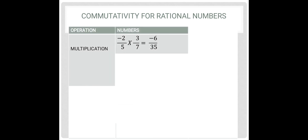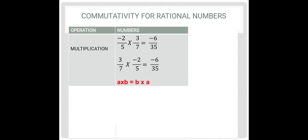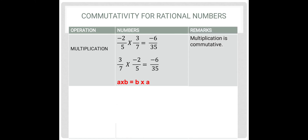Let us now check for multiplication and multiply any two rational numbers. Negative 2 upon 5 multiplied by 3 upon 7: 2 times 3 is 6, minus into plus will be minus, 5 times 7 is 35. So the answer is negative 6 upon 35. Let us now change the order: 3 upon 7 multiplied by negative 2 upon 5 gives the same answer, negative 6 upon 35. So for multiplication, when the order is changed, the answer has not changed. Therefore, a multiplied by b equals b multiplied by a. Hence, multiplication is commutative.